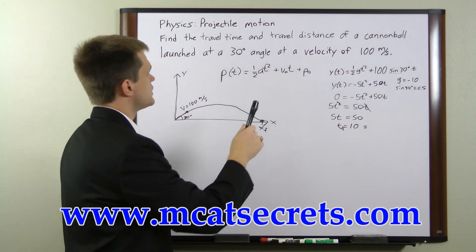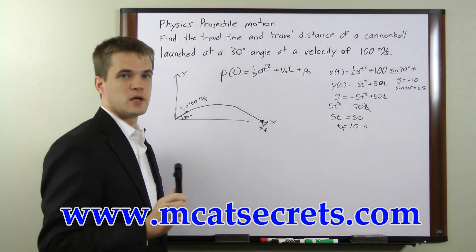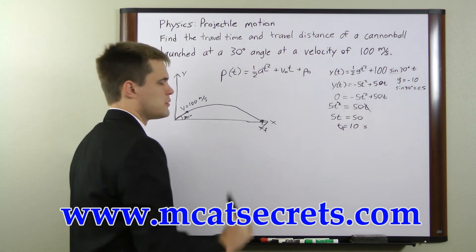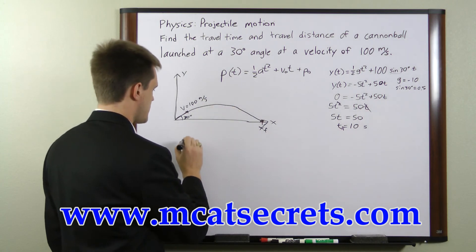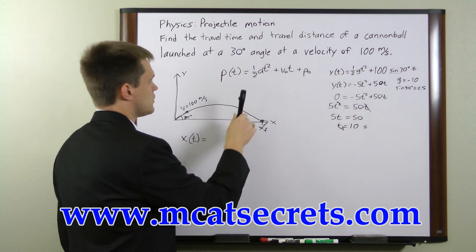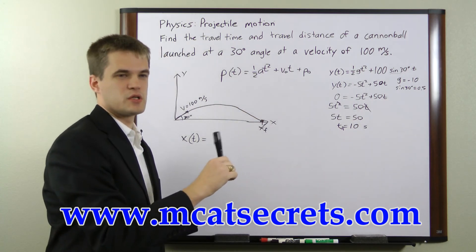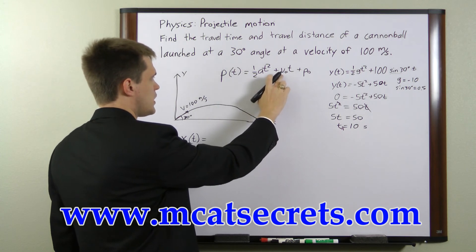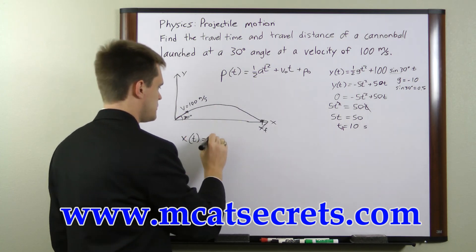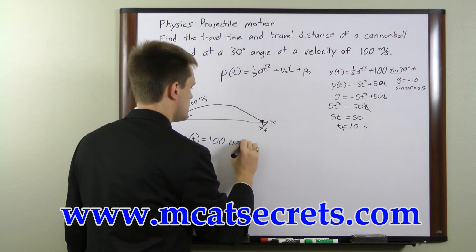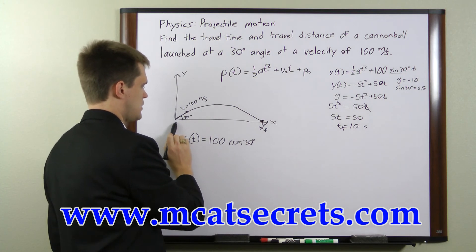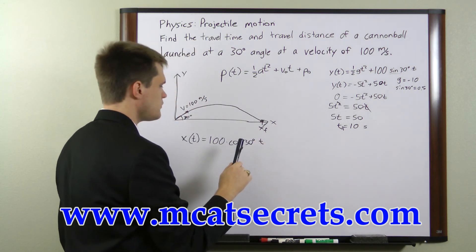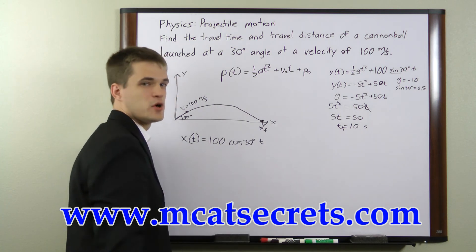Now what we need to do is find the travel distance. We need to write the equation of motion in the X direction and substitute in 10 seconds to find out how far it traveled before it hit the ground. The equation of motion in the X direction is: X at time t equals — there's no acceleration in the X direction because gravity only works in the vertical direction, so we can ignore that term. It's going to be our initial velocity in the X direction, which is 100 meters per second times the cosine of 30 degrees, because our vertical component was the sine and our horizontal component is the cosine. So 100 times cosine of 30 times t, and the initial position is 0.